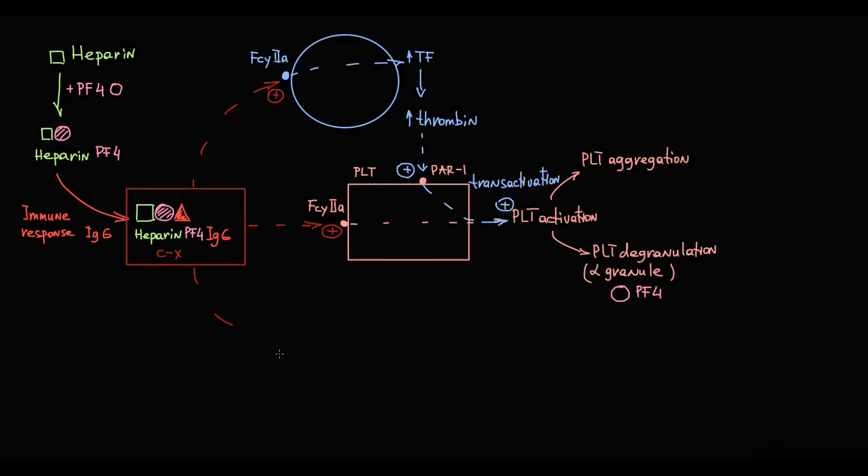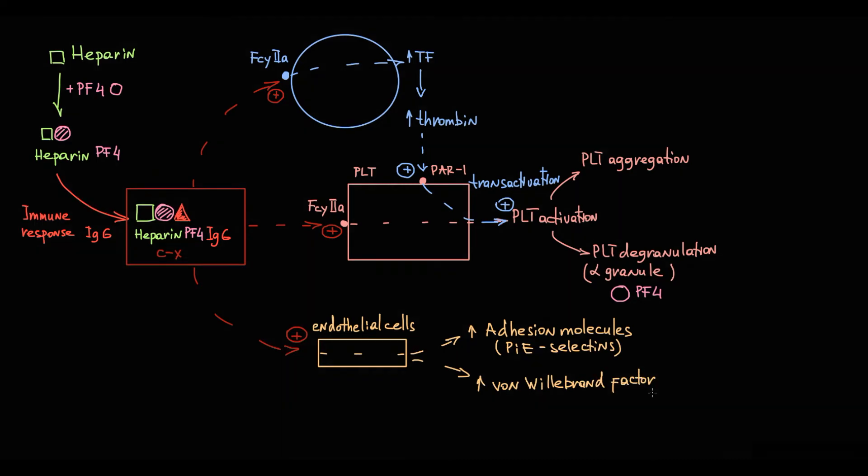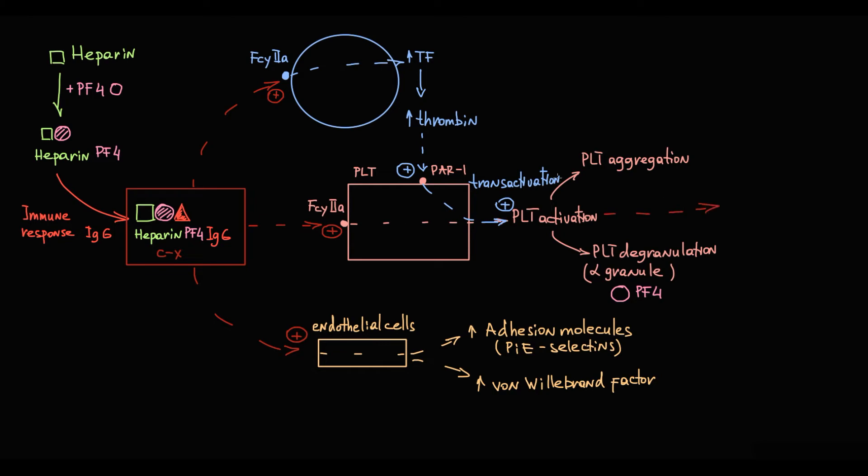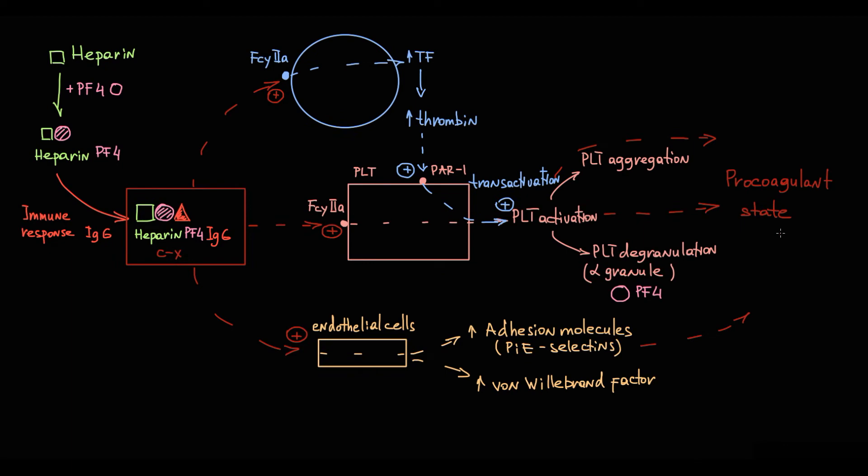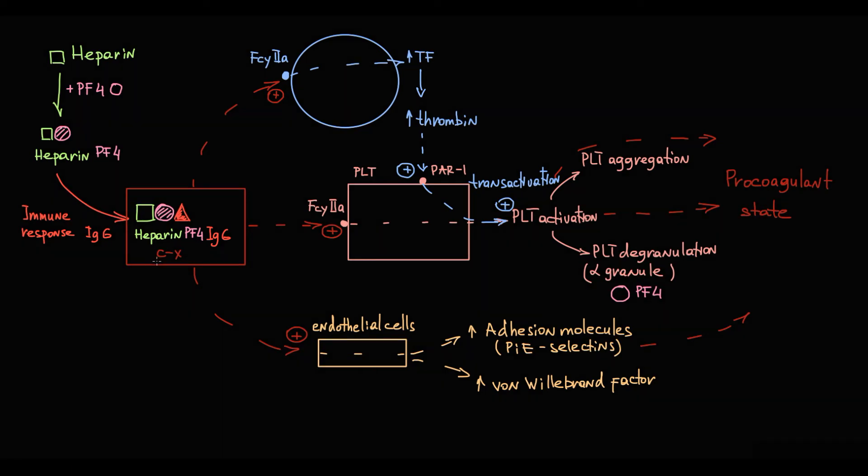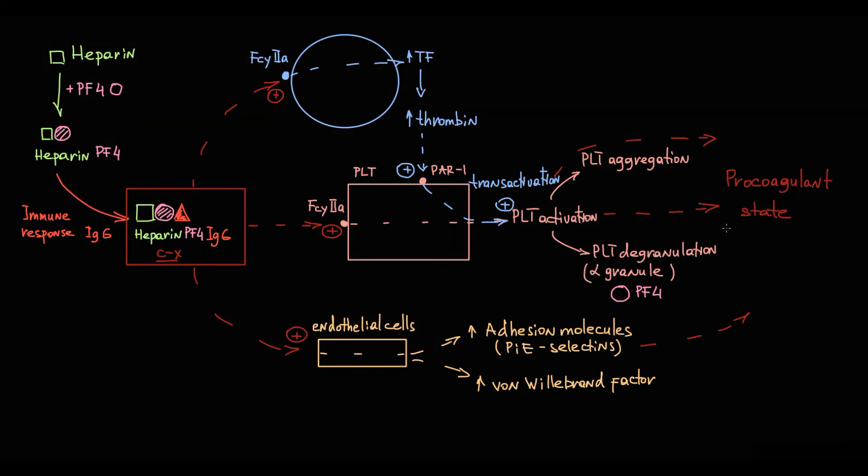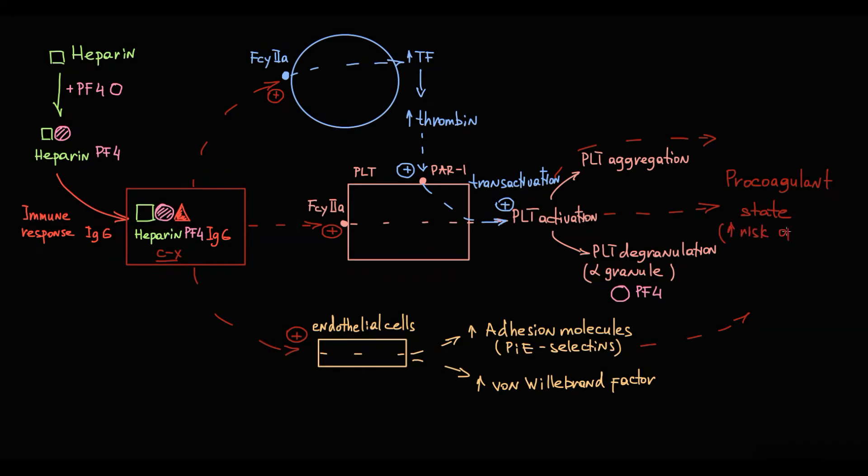Antigen-antibody complexes directly activate endothelial cells. They stimulate production of adhesion molecules such as P and E-selectins, and also induce secretion of von Willebrand factor, thereby creating even more prothrombotic environment. The combination of direct platelet activation, transactivation of platelets by monocytes, and procoagulant stimuli by endothelial cells induce strong local procoagulant state inside the blood vessel. Heparin-platelet factor IV-immunoglobulin G complexes create local prothrombotic environment that results in very high risk of thrombus formation.